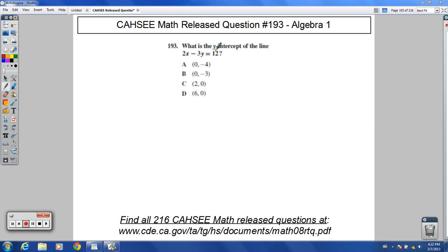So a couple different ways you could do this one. One way would be to actually get this into slope-intercept form. I'm not going to do that here though. But you could, to do that, you would subtract 2x and then divide everything by negative 3. That would give you the y-intercept.